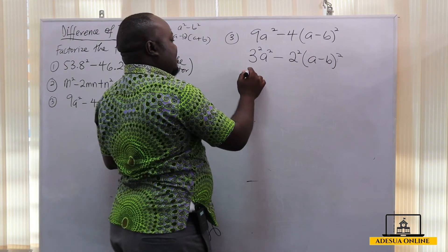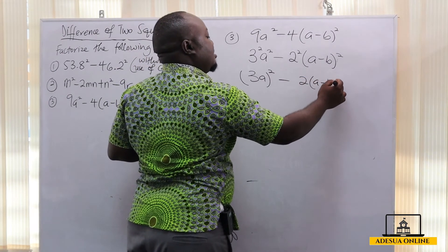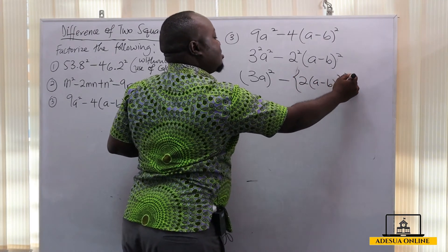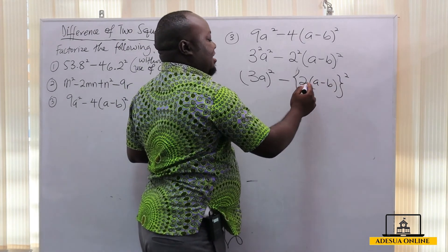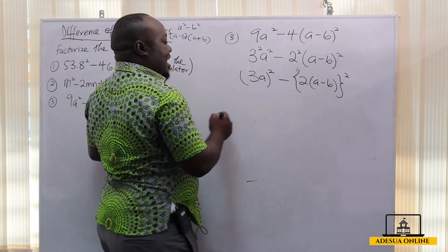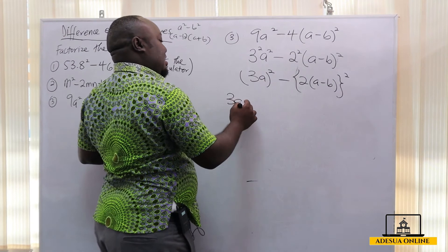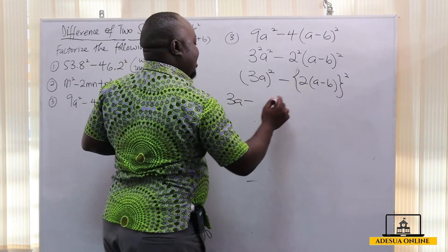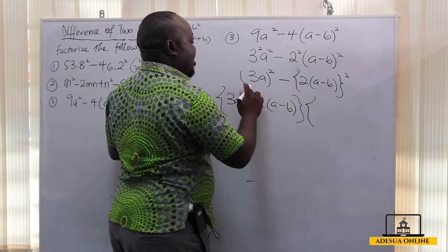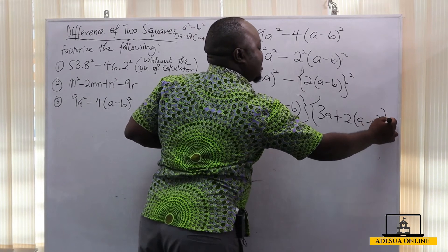So I'm going to write this as (3a)² minus (2(a - b))², using curly brackets so the square affects both the 2 and the (a - b). Now we have the difference of two squares. Assuming 3a is my a and 2(a - b) is my b, I can express this as (3a - 2(a - b))(3a + 2(a - b)).